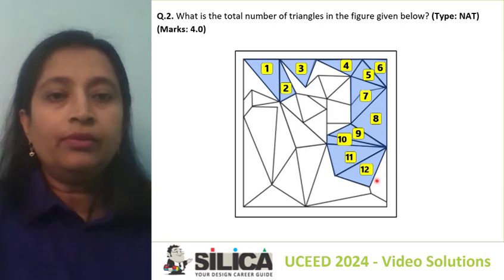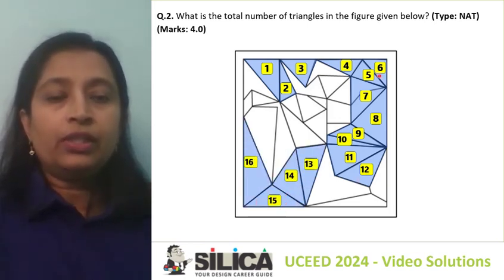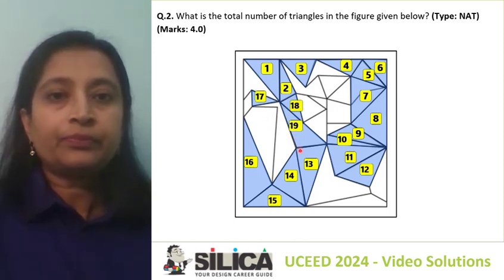Then there is the eighth, ninth, and three more triangles — so 12. Triangles on this side are finished. Coming to this line, there are one, two, three, four — four triangles here — so 12 plus 4 equals 16. All the triangles attached to the sides are 16. Now coming to this part, we can see there are more triangles: the 17th, 18th, and 19th.